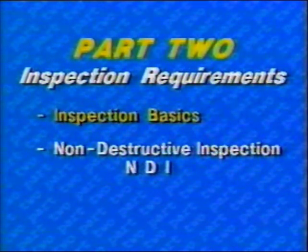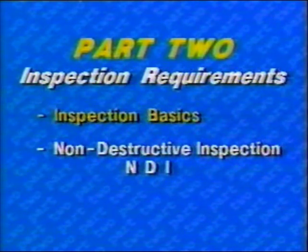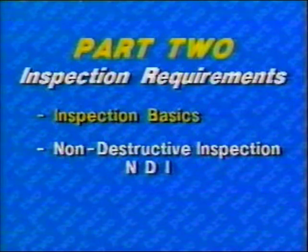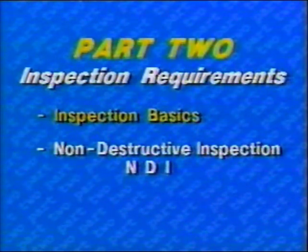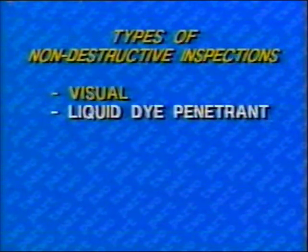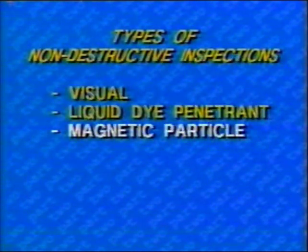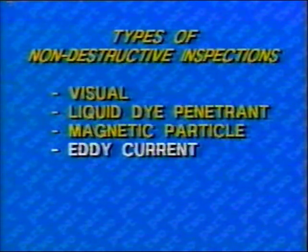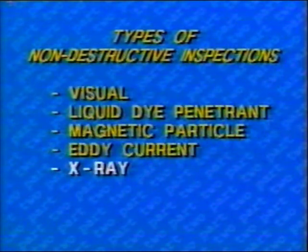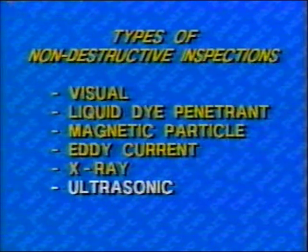Non-destructive inspection, or NDI, allows you to inspect for corrosion without doing damage to the aircraft itself. Several types of NDI are listed in your AC-43-4A, and we will discuss six of them: visual inspection, liquid dye penetrant, magnetic particle inspection, eddy current inspection, x-ray inspection, and ultrasonic inspection. We will look at each one briefly.